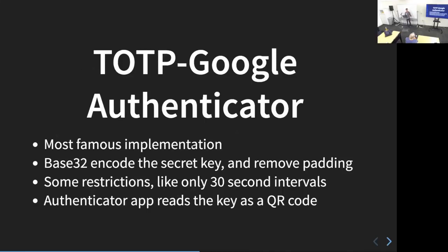The most famous implementation of TOTP is probably Google Authenticator. What Google Authenticator did is take the standard RFC for implementing TOTP and make a few refinements: you need to base-32 encode the secret key, which makes it case-insensitive and reduces it to just numbers and letters that someone can easily type, and it also removes padding — the equal signs at the end of base-32 encoded data — to be nicer for the user to enter.